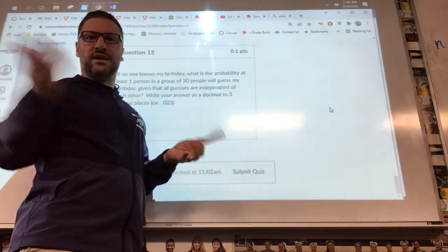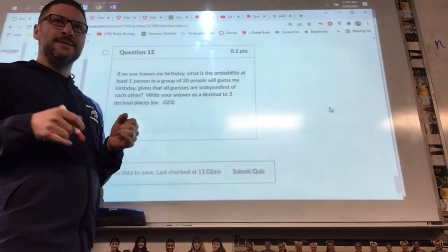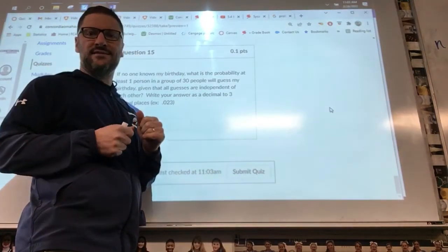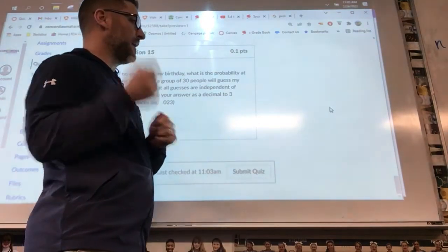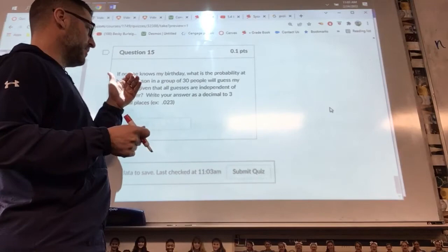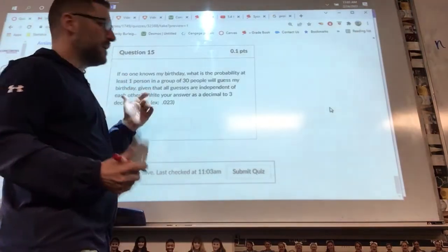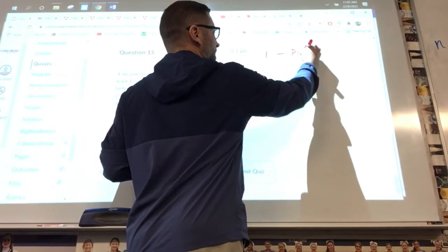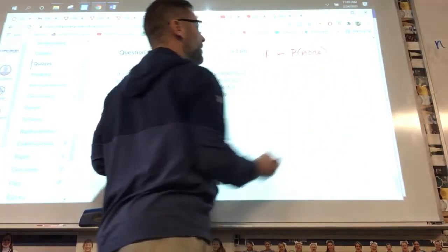Independent means everybody could, you know, theoretically everybody could guess the same number or the same birthday. The probability that at least one is the hard one. And whenever I do the probability of at least one, I do 1 minus the probability of none.